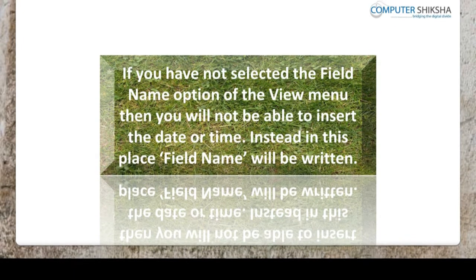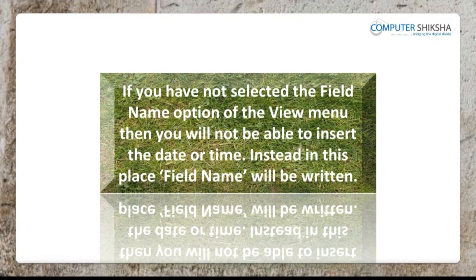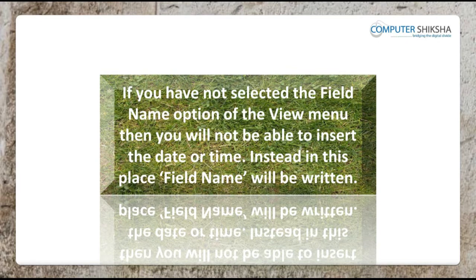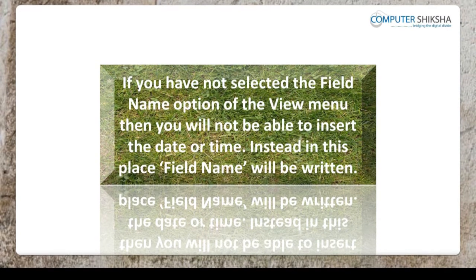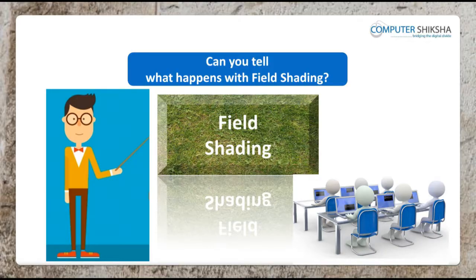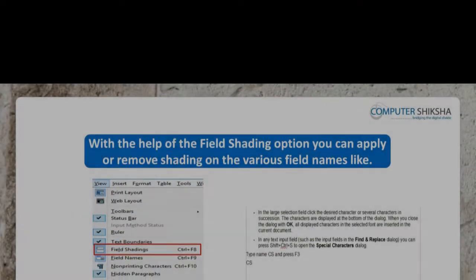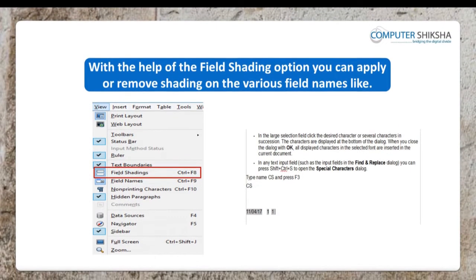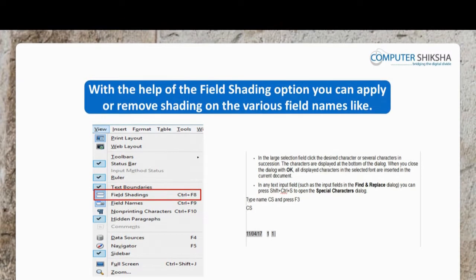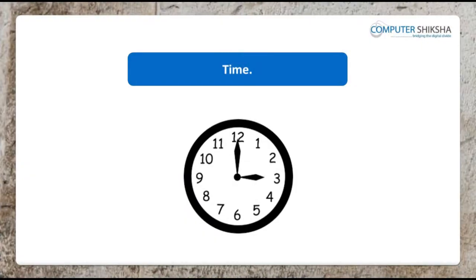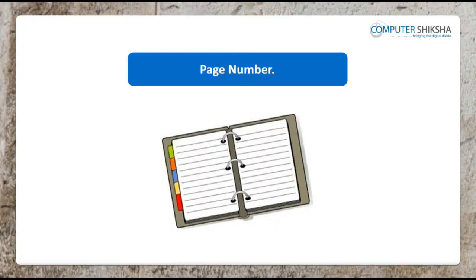If you have not selected the Field Name option of the View menu, then you won't be able to insert the date and time. In its place, you will find the Field Name appearing there. Can you tell what happens with Field Shading? With the help of the Field Shading option, you can apply or remove shading on the various Field Names like Date, Time, Page Number, Count, etc.